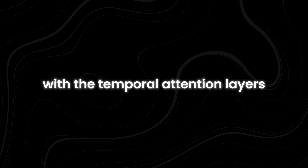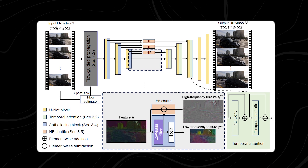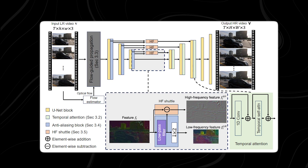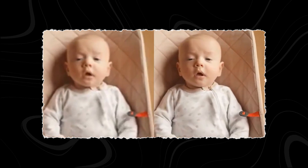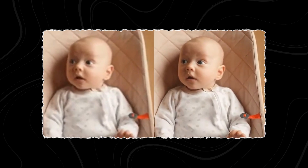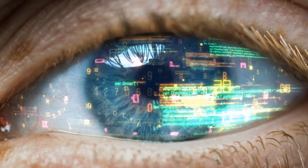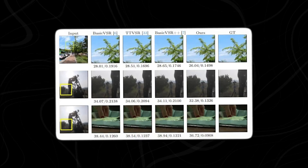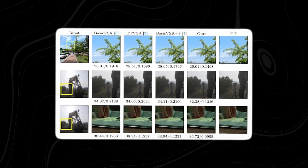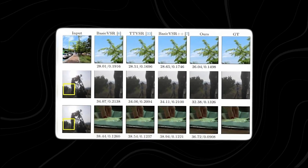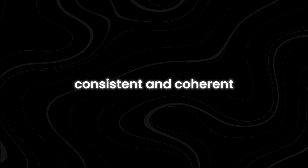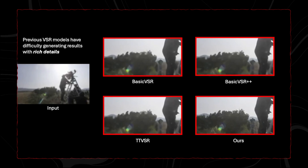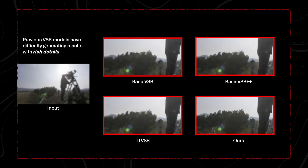Once the upsampler has been enhanced with the temporal attention layers, the process moves to the next step: incorporating the Flow Guided Propagation Module. This nifty component plays a vital role in enhancing the temporal consistency of the output video by employing a combination of optical flow estimation and neural networks. The Flow Guided Propagation Module works by aligning and merging features from different frames, ensuring that the information across frames is consistent and coherent.